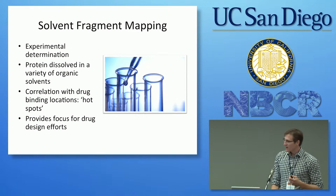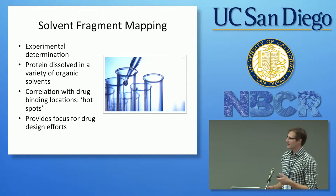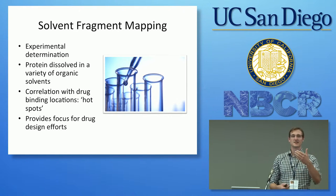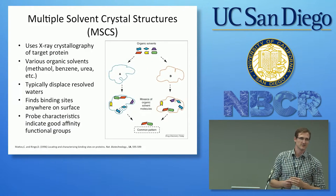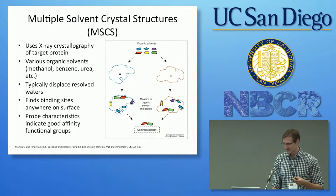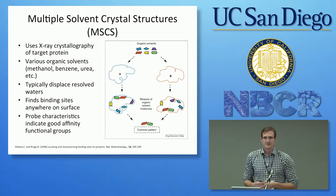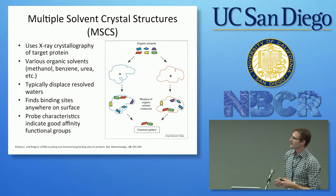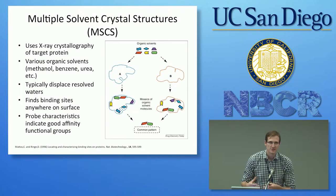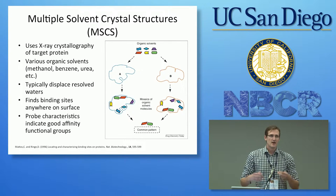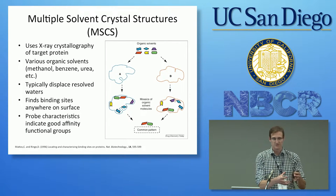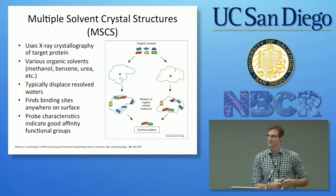This technique is often used for drug discovery. Where a benzene might attach to the surface is where you might have a phenyl ring on a drug molecule, helping guide drug design. One method is called MSCS — multiple solvent crystal structures — where these small molecules are dissolved at a certain concentration, the protein is crystallized, and then the structures are resolved using X-ray crystallography to visualize where the probes have bound.